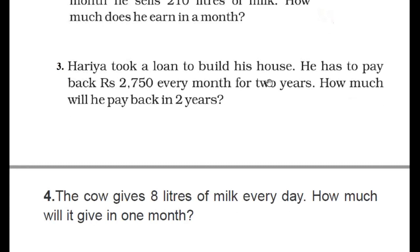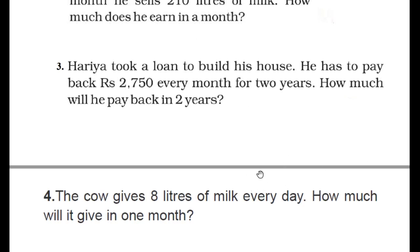Next: Hariya took a loan to build his house. He has to pay back rupees 2750 every month for two years. How much will he pay back in two years? Two years में कितने months होते हैं — one year में 12 months, तो two years में 24 months. 2750 में 24 का multiply करिए, आपका answer आ जाएगा.